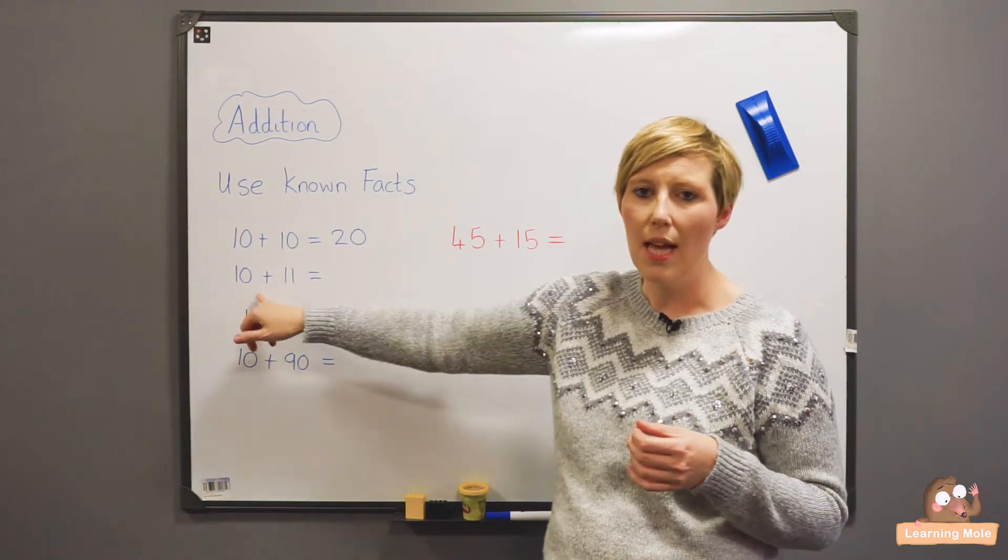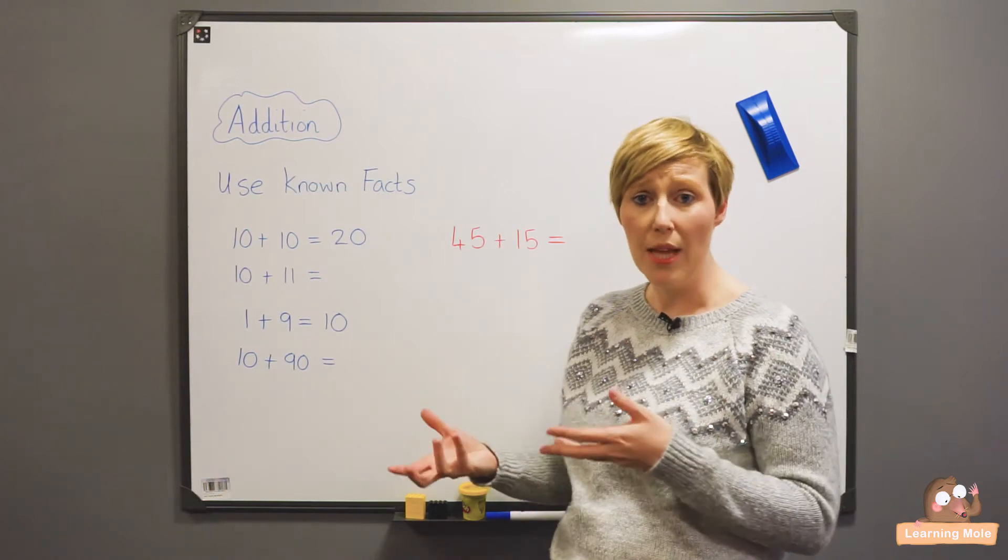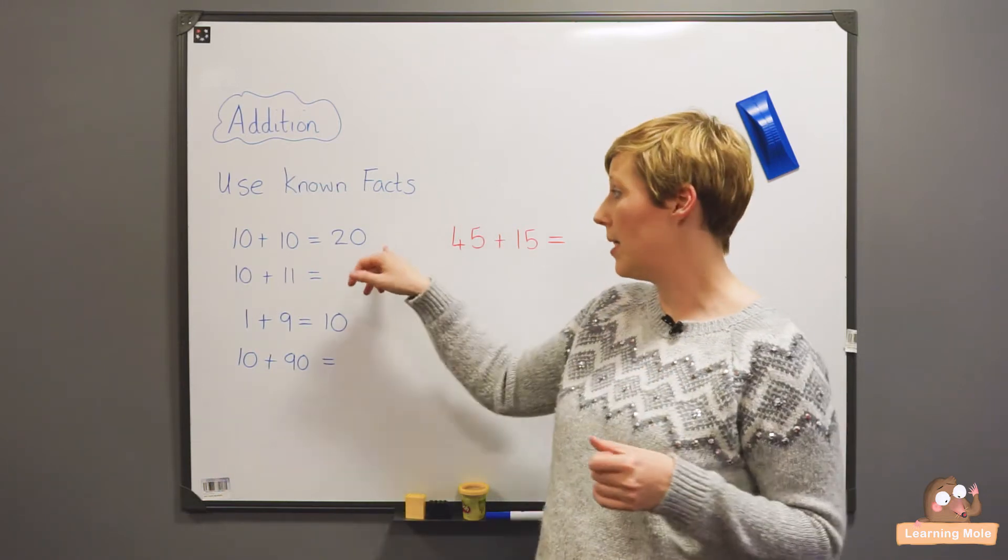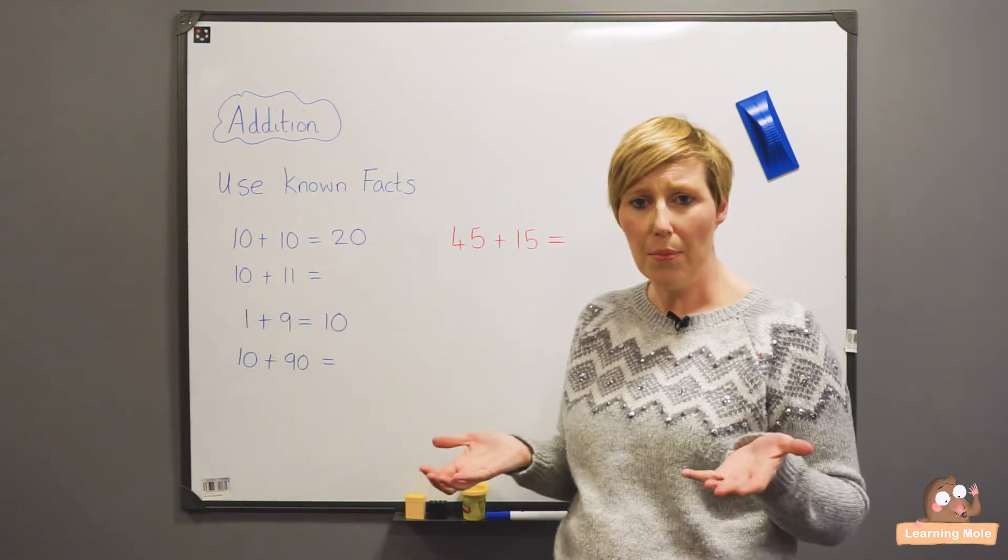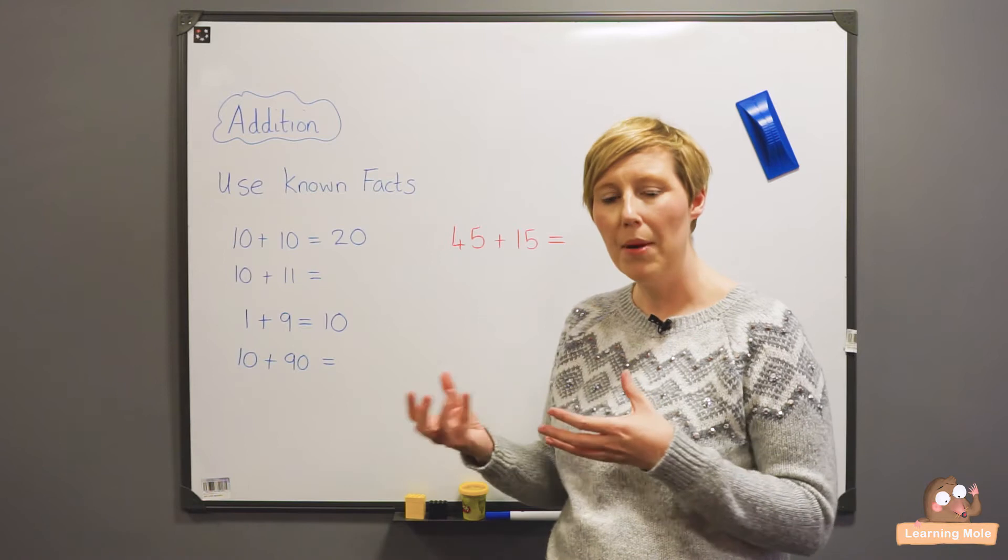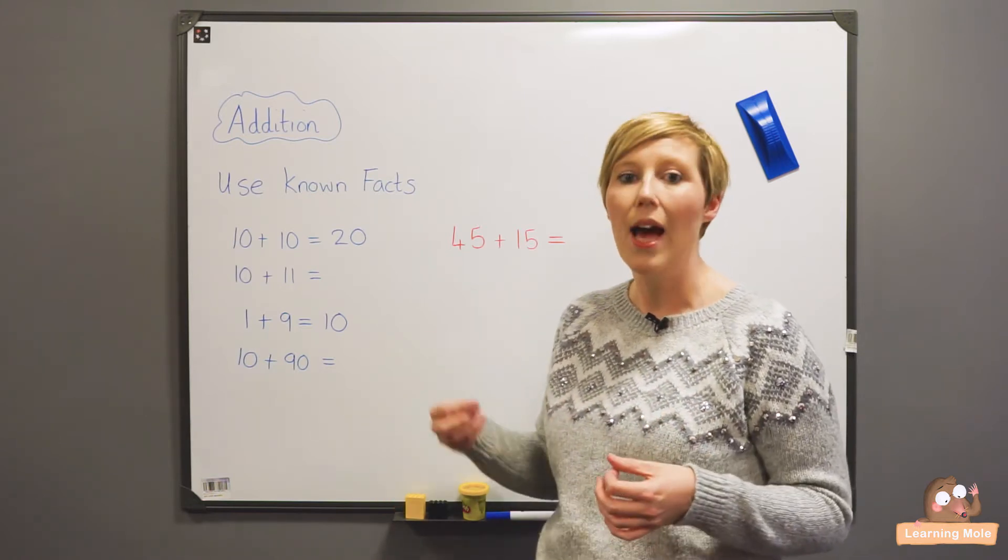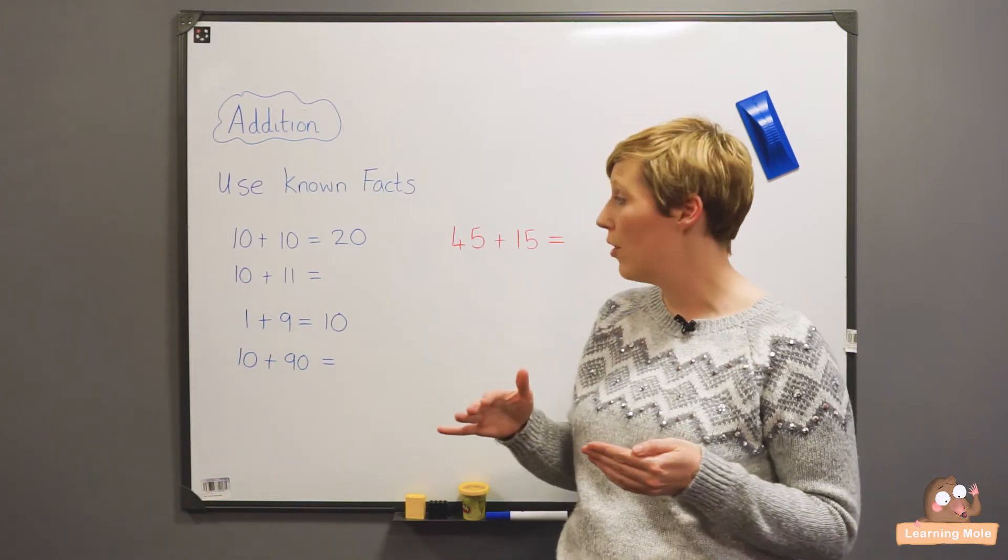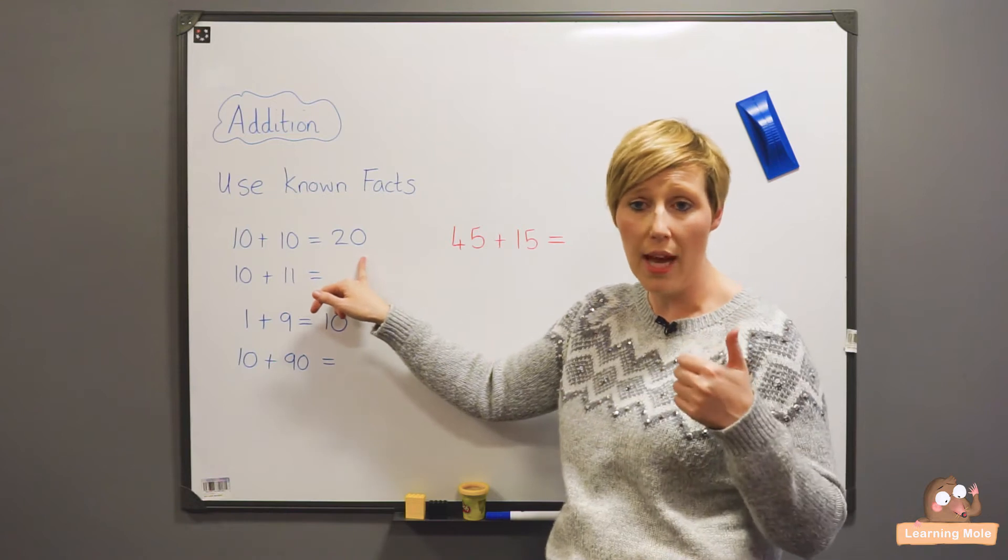So I'm now thinking, well, 10 plus 11. 11 is quite near 10, isn't it? Well you know that, don't you? And you know that 10 plus 10 is 20. So you've got 10, and what's 11 made up of? Oh, 11 is 10 plus 1. So you've now got two 10s, which you already know is 20, and you're adding on your 1. And actually talk through that process with your child. The 10 plus 10 is 20, they already know that.